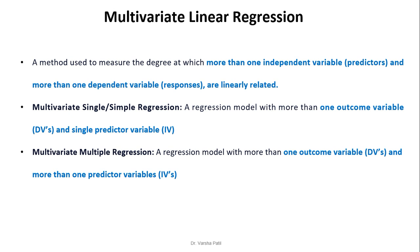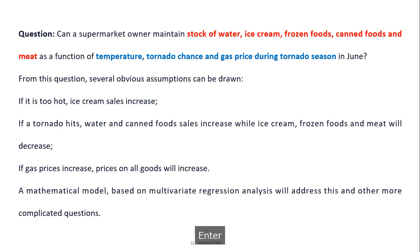Multivariate simple regression is a regression model with more than one dependent variable and a single independent variable. Multivariate multiple regression is a regression model with more than one dependent variable and more than one independent variable.